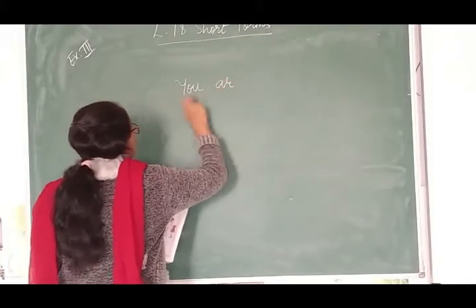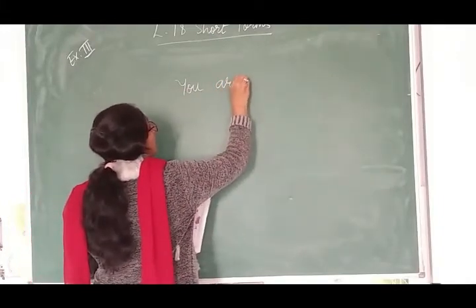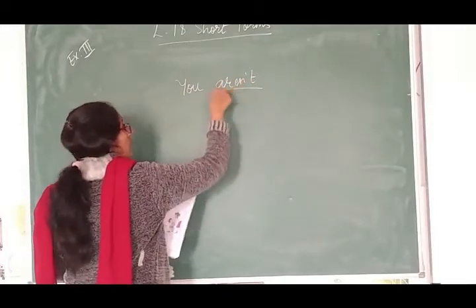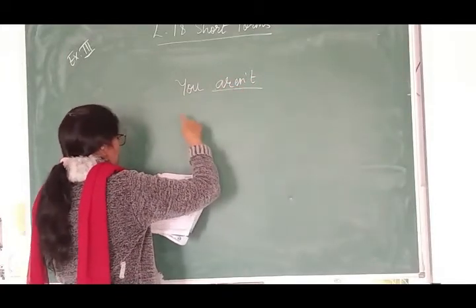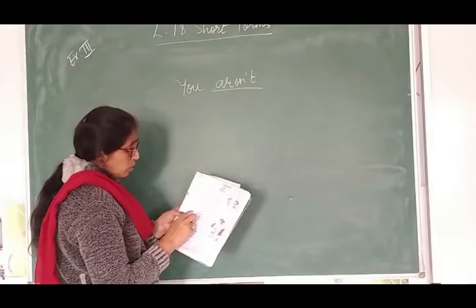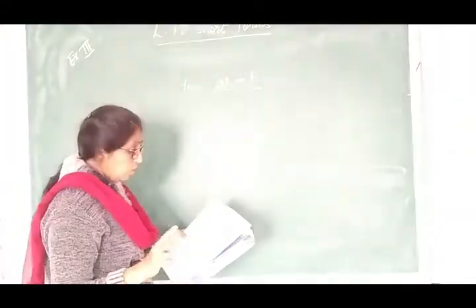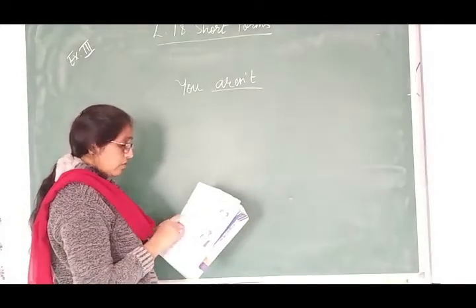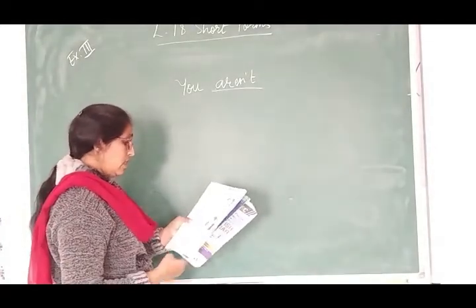You karke, jo pronoun hota hai, aren't. Yeh form right hai, you are negative form mein hi aata hai, okay? Aur, yaha pe, second vala example, you apostrophe are hi dikha hai. You are not tired, but I apostrophe am. So, that is wrong. First vala jo statement, that is right.